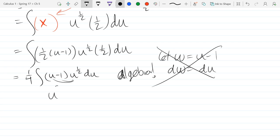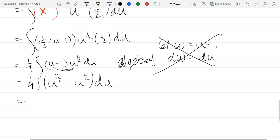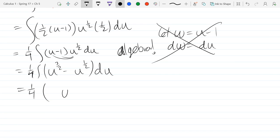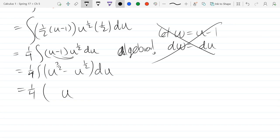So this is u to the 3 halves minus u to the 1 half. So I just added powers together, so u to the 1 half plus 2 halves is 3 halves. What are these antiderivatives? So just remember, add 1 to the power. 3 halves plus 1 is 5 halves, divided by 5 halves, minus 1 half plus 1 is 3 halves, divided by 3 halves.